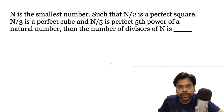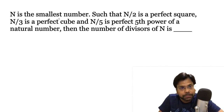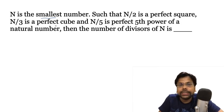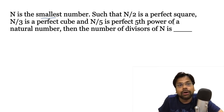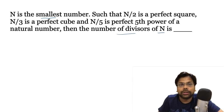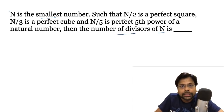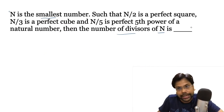Now here is your homework. N is the smallest number such that n divided by 2 is a perfect square, n divided by 3 is a perfect cube, and n divided by 5 is a perfect fifth power of a natural number. Then the number of divisors of n is what? With the learning from this question, try to solve this one.